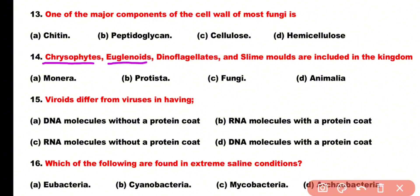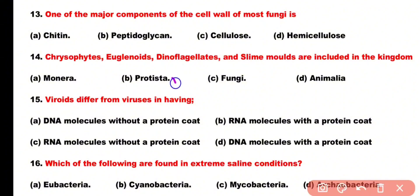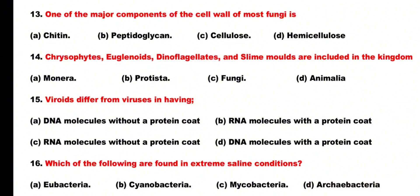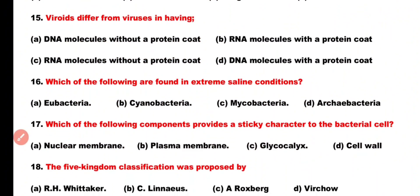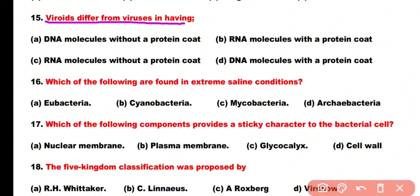Question number 14: Chrysophytes, euglenoids, dinoflagellates and slime molds are included in which kingdom? Options: Monera, Protista, Fungi, Animalia. Correct answer is option B. Chrysophytes, euglenoids, dinoflagellates and slime molds are eukaryotic unicellular organisms and are present in kingdom Protista.